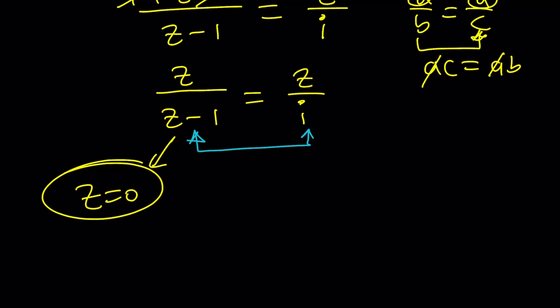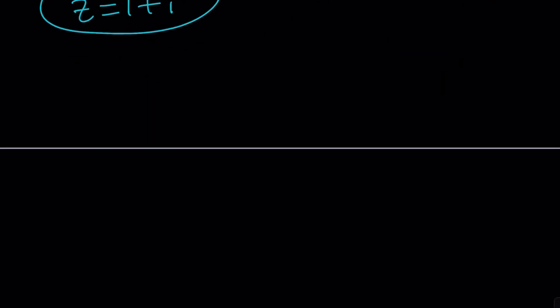And the other idea is when the denominators are equal, right? Obviously, that makes sense. So z minus one equals i and z equals one plus i. And that's the other solution. And we just found that with the first method, too. But which method do you like better?